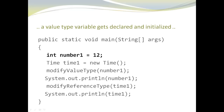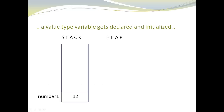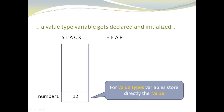Let's start with the first statement. We are going to declare and initialize an integer variable, number1, and this is how it looks. On the stack, I have a variable called number1; it is of type integer, and the value 12 is directly stored in my variable number1. For value types, variables store directly the value.